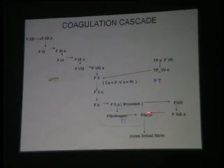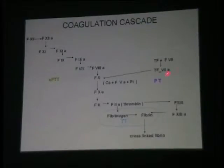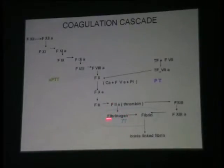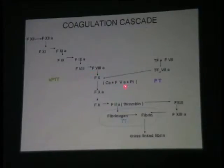Let's come to another test which is thrombin time. Look at this part of your classic coagulation cascade — fibrinogen to fibrin only. If you have a prothrombin time which is prolonged and APTT also prolonged, you want to know whether fibrinogen is there, the end product. If thrombin time is normal, that means fibrinogen to fibrin conversion is occurring, meaning both pathways have a common problem in the common pathway — factors 10, 5, and 2. That is the significance of thrombin time.